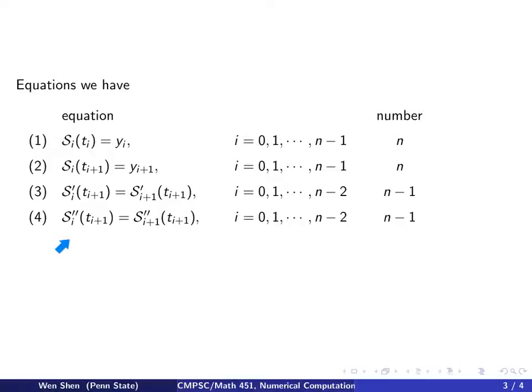And finally, the second derivative must be continuous as well at all the inner knots. So this is the same as these, except that I now take second derivative on the S. And by the same reason, I will have n minus 1 equations.